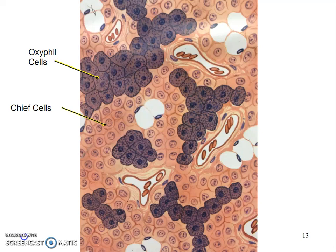Remember, the thyroid gland was made up of thyroid follicles, whereas the parathyroid gland is made up of many different cells. In particular, it is made up of two types of cells: chief cells and oxyphil cells. The oxyphil cells are the darker stained cells, and they do not have a known function as of today. They may be there just for structural support, but that is all we know about these cells.